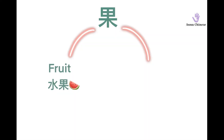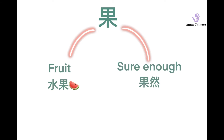果 has two meanings. The first meaning is 水果, fruit. The second meaning is 果然, sure enough.